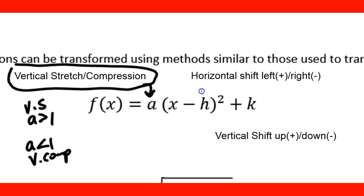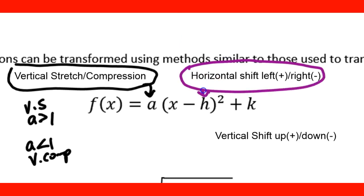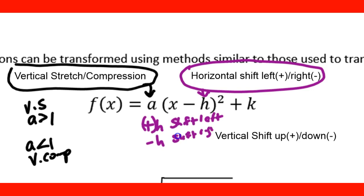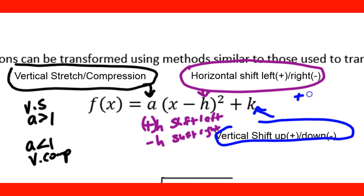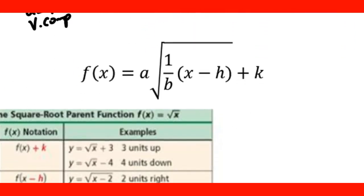For horizontal shifts, 'h' controls left-right movement: if the expression is (x + h), the graph shifts left; if it's (x − h), the graph shifts right. For vertical shifts, 'k' controls up-down movement: +k shifts the graph up, and −k shifts the graph down. These same rules apply to both square root and cube root radical functions.